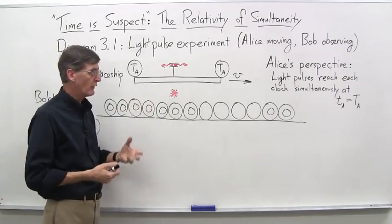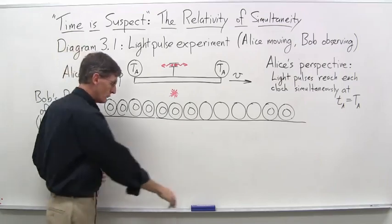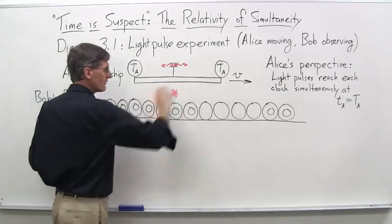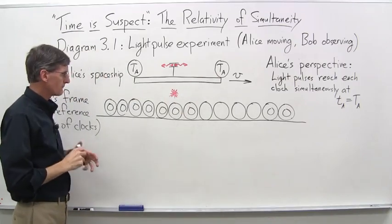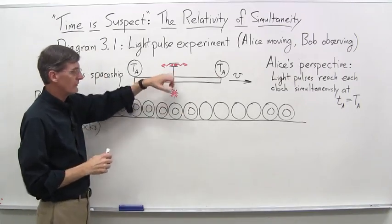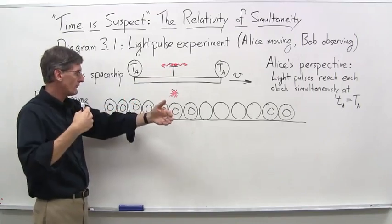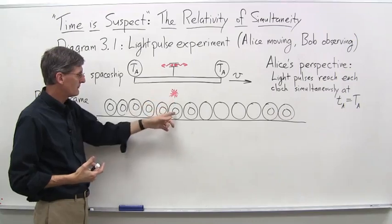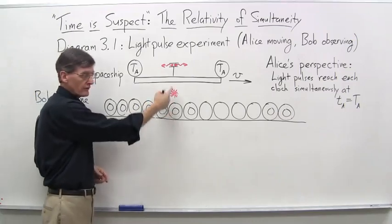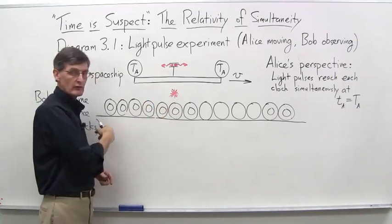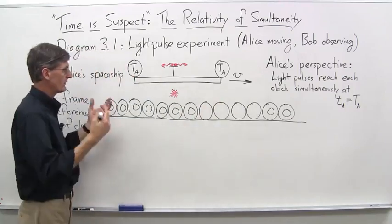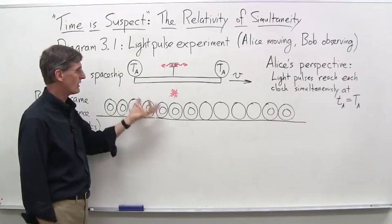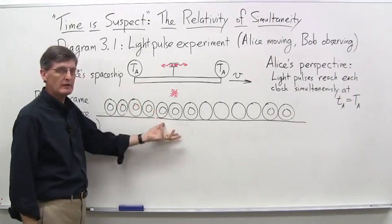Now we need to look at what Bob is observing. Because remember, he's down here with his lattice of clocks. He sees Alice moving to the right at velocity V. Again, we will assume that when the light pulses get shot off, there's a little puff of smoke behind, as it were, right at that position. And Bob notes on his clock, takes a photo there, notes his clock is zero. All of them are zero at that point. So he says, yes, I see that light pulses were shot at time T sub B equals zero.